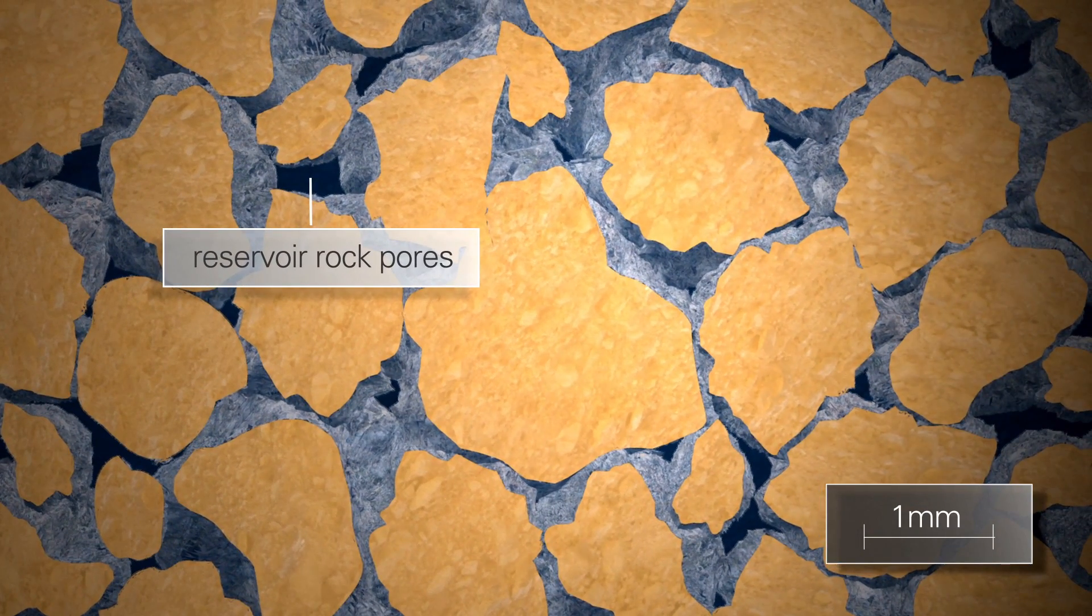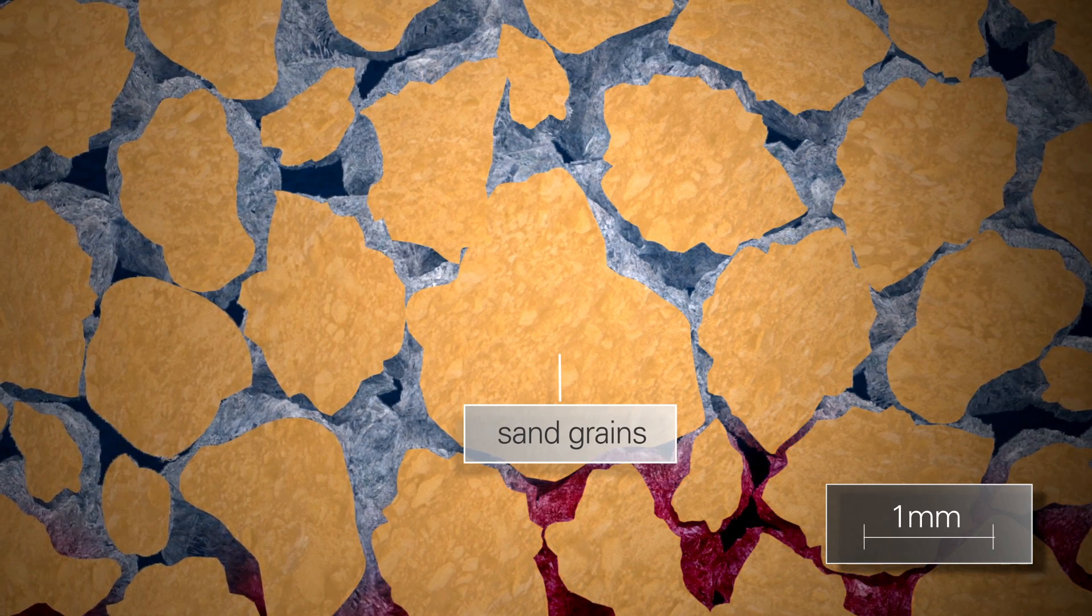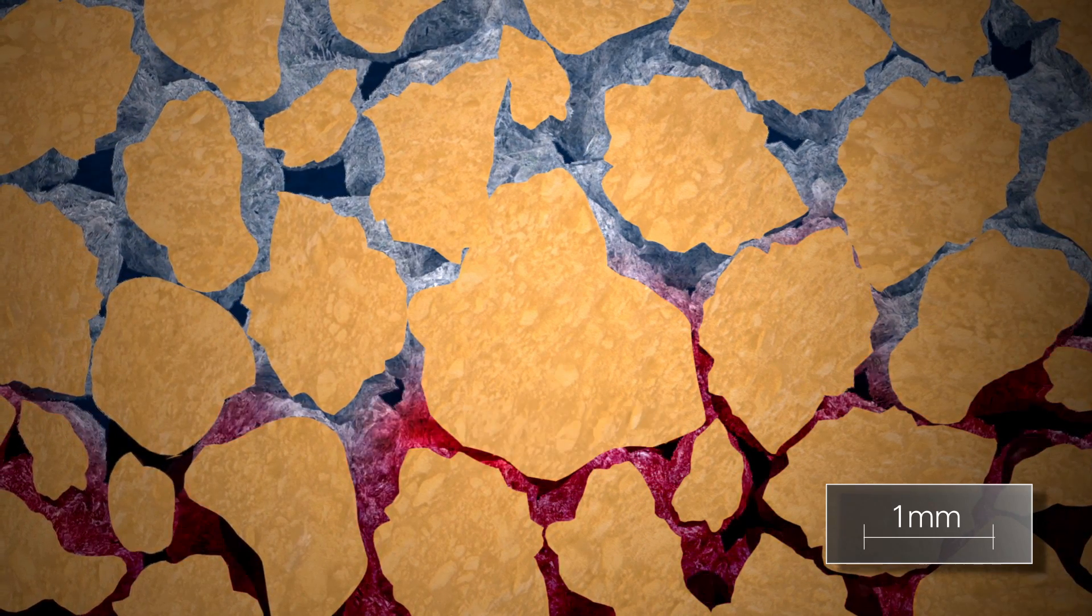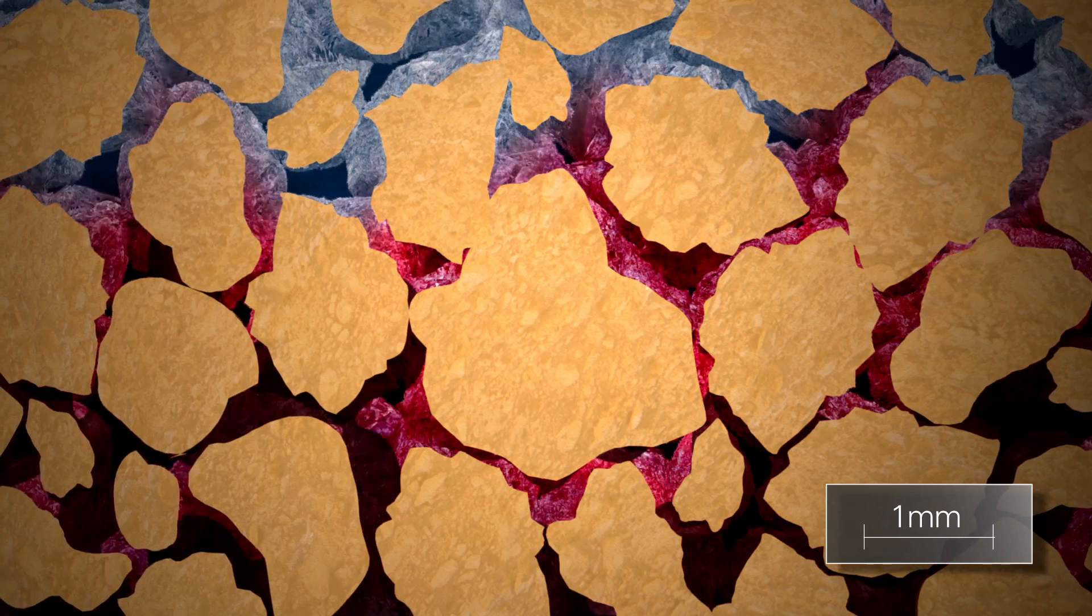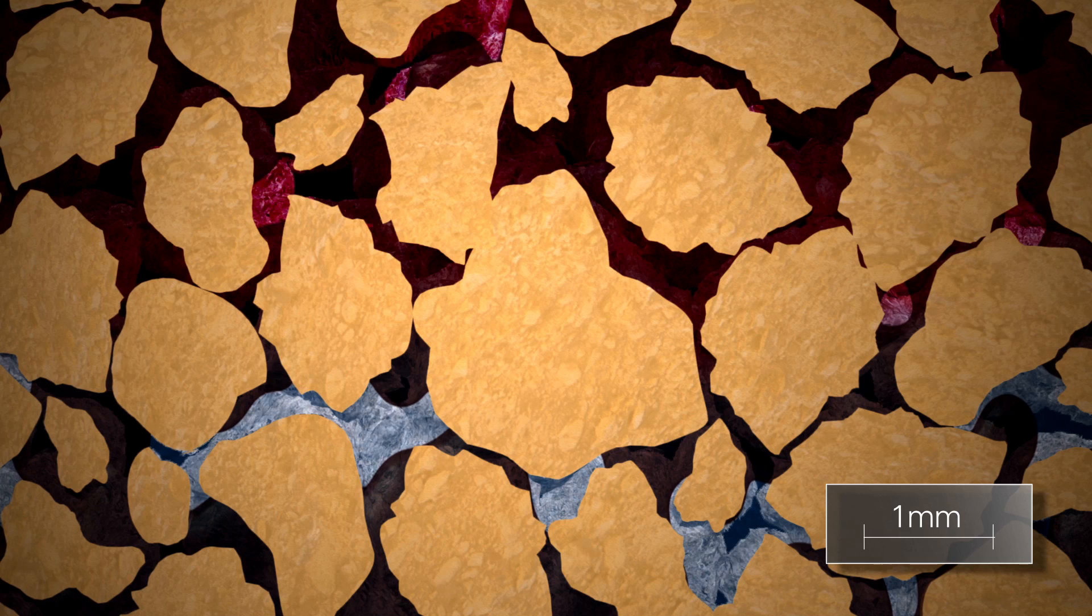In a sandstone rock, the pores are gaps between the sand grains stuck together by natural cement. The grains of sand contact with each other only at certain points, allowing water, oil and gas to flow through.